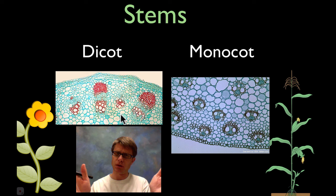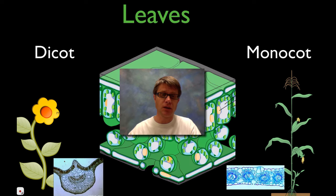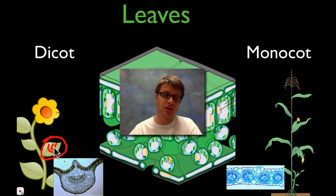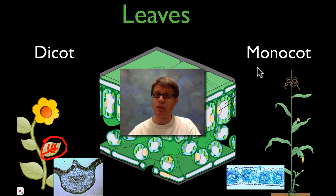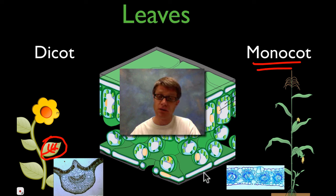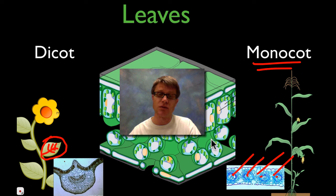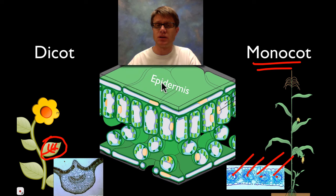Those stems eventually bud off and reach the leaves. What makes a dicot a dicot is its net-like venation — you can see nets branching off, and those veins are actually the vascular tissue. In a monocot, one of the characteristics is parallel veins running through the leaf. Those veins are vascular tissue moving right through the leaf.